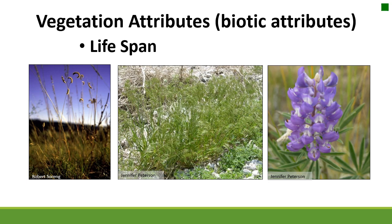We could also look at the lifespan of different plants. It kind of depends on what our objectives are for the range — are we interested in knowing the exact plant species, or is understanding lifespan going to be enough information to gauge whether we're meeting our objectives? For example, we could measure different plants by whether they're perennials, annuals, biennials, and all of those lifespan characteristics that we discussed.